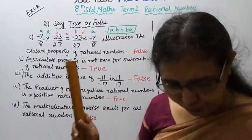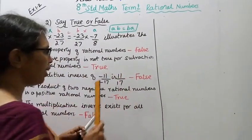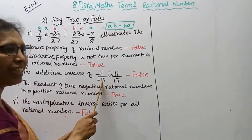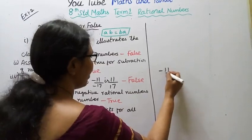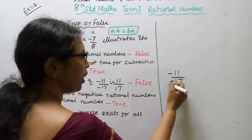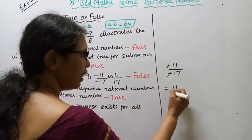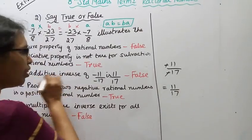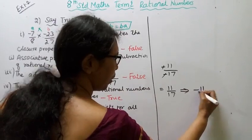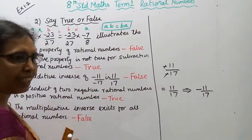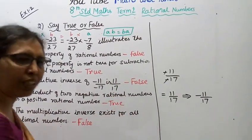Third: The Additive Inverse of minus 11 by minus 17 is 11 by 17. When we simplify minus 11 by minus 17, the two negatives cancel, giving us 11 by 17. The Additive Inverse means we only change the sign, so the additive inverse of 11 by 17 should be minus 11 by 17. So the answer given is False.